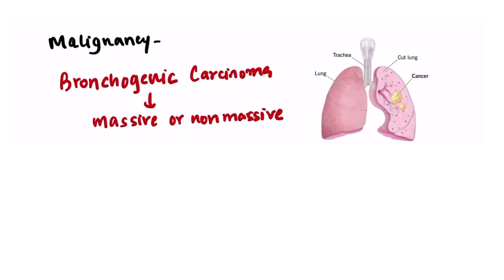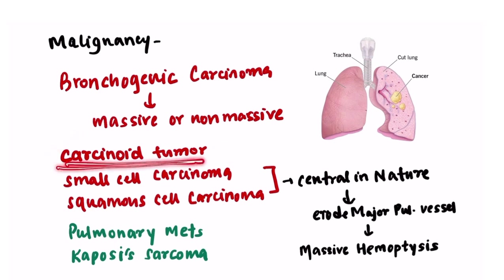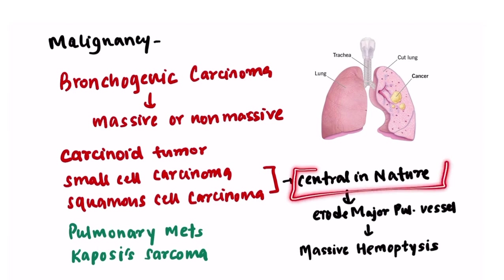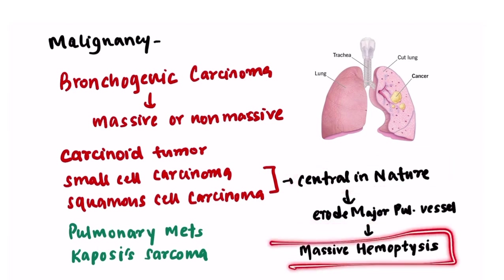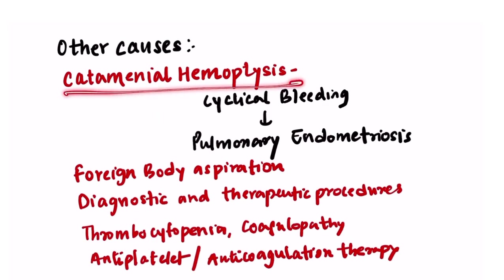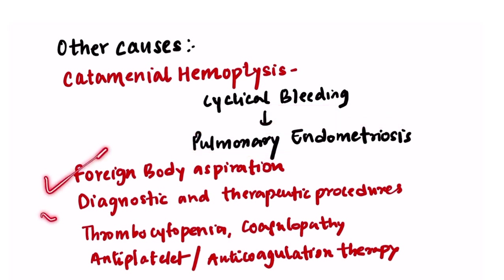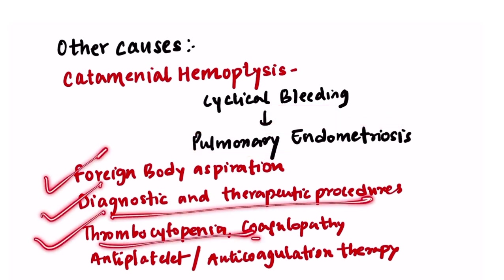Malignancy is associated with hemoptysis whenever the tumor invades the airways, so hemoptysis in malignancy signifies airway involvement. Bronchogenic carcinoma can cause massive or non-massive hemoptysis. In many patients, hemoptysis can be the presenting symptom of a carcinoid tumor. Small cell carcinomas and squamous cell carcinomas are central in nature and can erode the main pulmonary vessels, causing massive hemoptysis. Pulmonary metastasis and Kaposi's sarcoma in AIDS patients can also cause hemoptysis. Other causes include catamenial hemoptysis from pulmonary endometriosis, foreign body aspiration, diagnostic and therapeutic procedures, thrombocytopenia, coagulopathies, and antiplatelet and anticoagulant therapy.